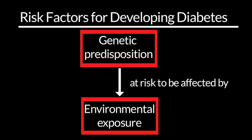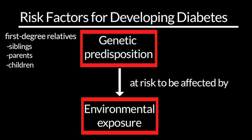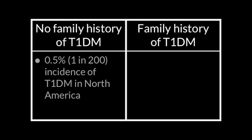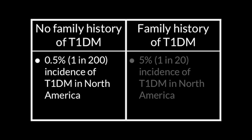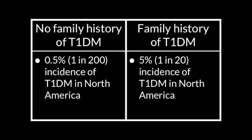When trying to identify patients at increased risk — those first-degree relatives, so siblings, parents, children — instead of having the usual background rate in the North American population of roughly 0.5% for type 1 diabetes, people who have a first-degree relative with diabetes are at a ten-fold increased risk, and now have a 5% incidence of type 1 diabetes.